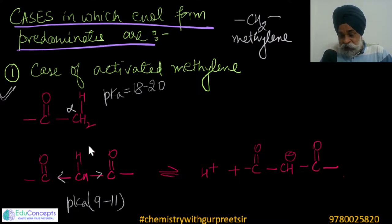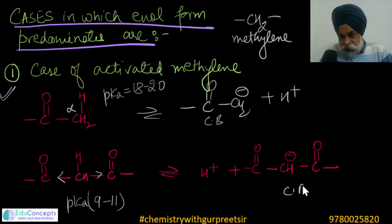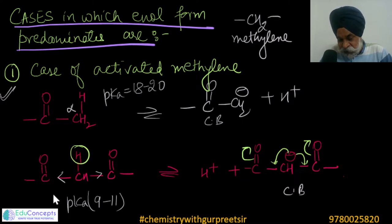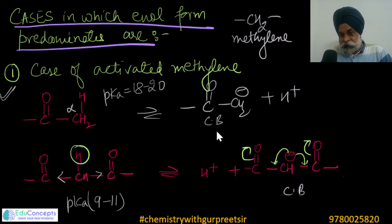What I'm saying is: if we remove H⁺ from both sides, the conjugate base of the activated methylene compound is more resonance-stabilized than that from a simple aldehyde or ketone. Since it is more resonance-stabilized, this particular hydrogen is more acidic. Activated methylene always has a lower pKa and greater acidity because the two electron-withdrawing carbonyl groups more effectively stabilize the conjugate base compared to a simple aldehyde or ketone.